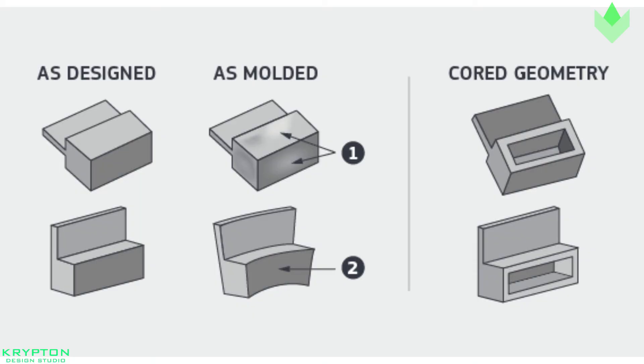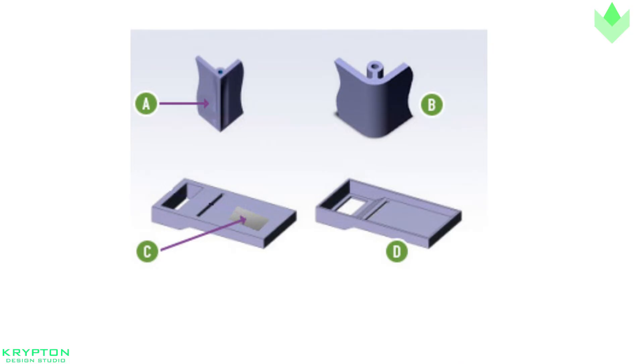Uniform wall thickness: Thick sections take longer to cool than thin ones. During the cooling process, if walls have inconsistent thickness, the thinner walls will cool first while the thick walls are still solidifying. As the thick section cools, it shrinks around the already solid thinner sections.